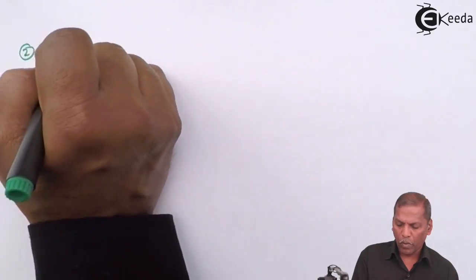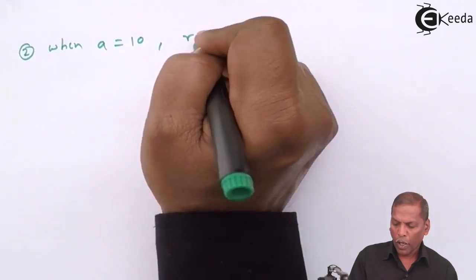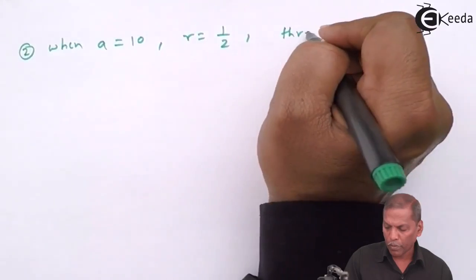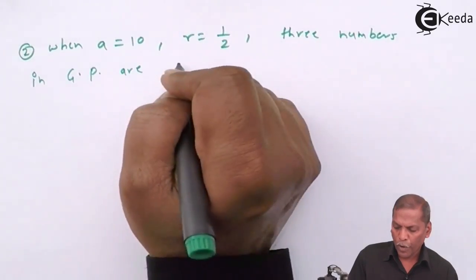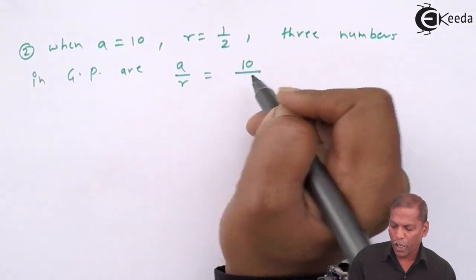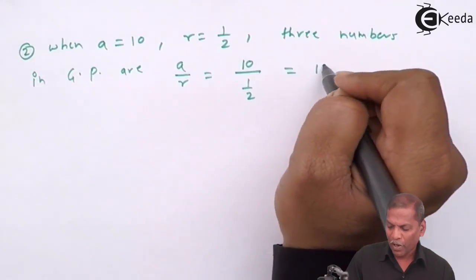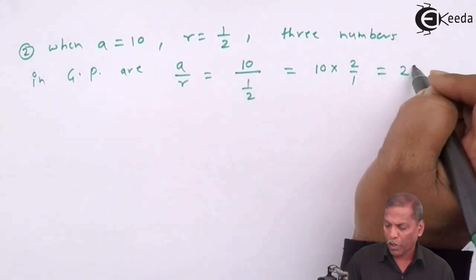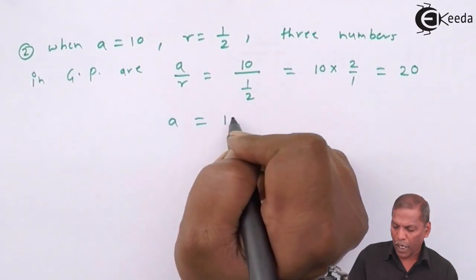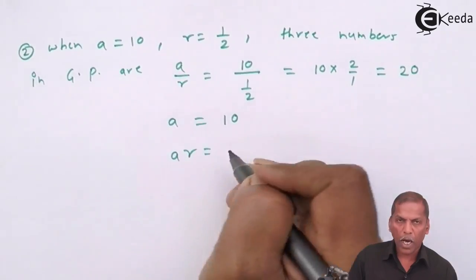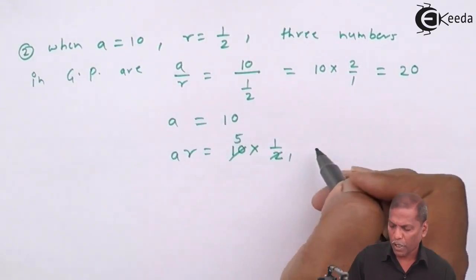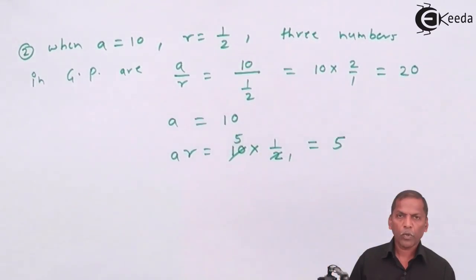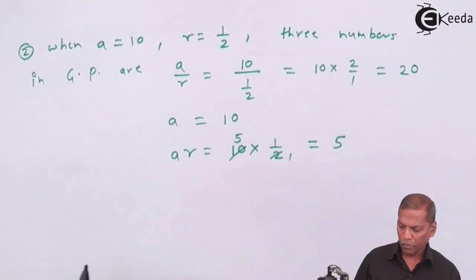Case 2: when A = 10 and R = 1/2. The three numbers in GP are: first number A/R = 10 ÷ (1/2) = 10 × 2 = 20, second number A = 10, and third number AR = 10 × (1/2) = 5. So in this case, the three numbers in GP are respectively 20, 10, and 5.